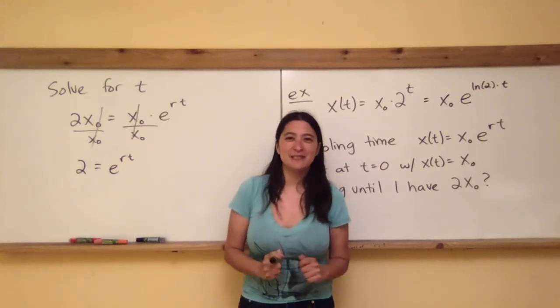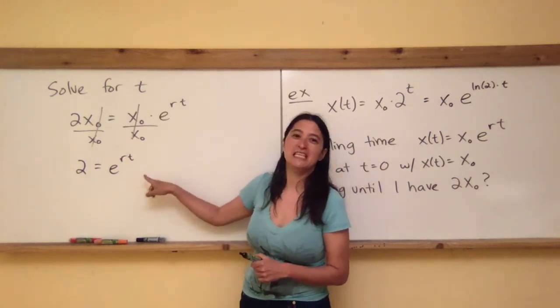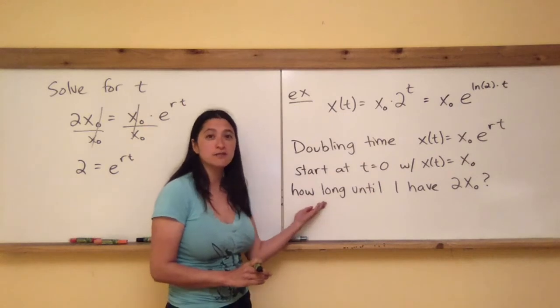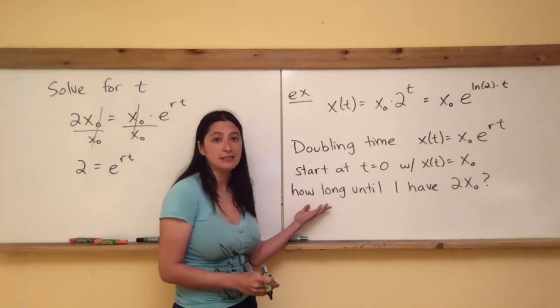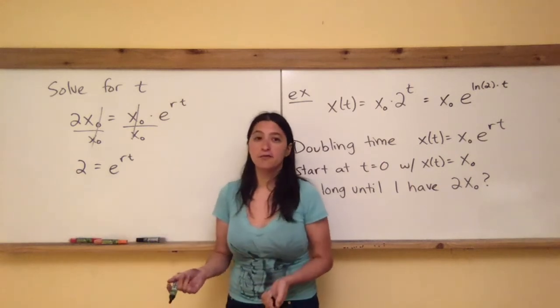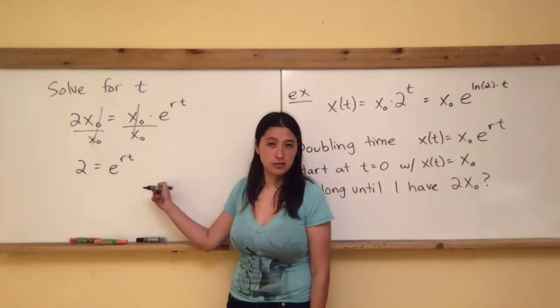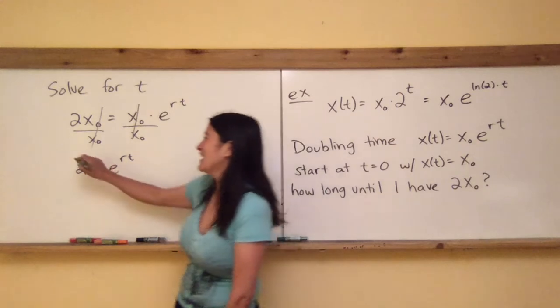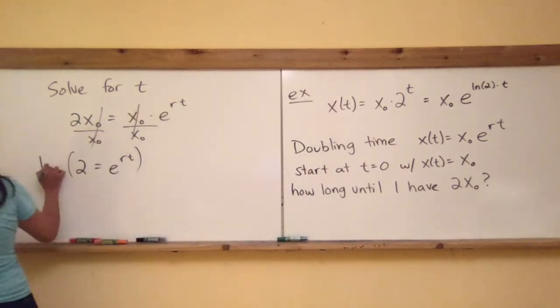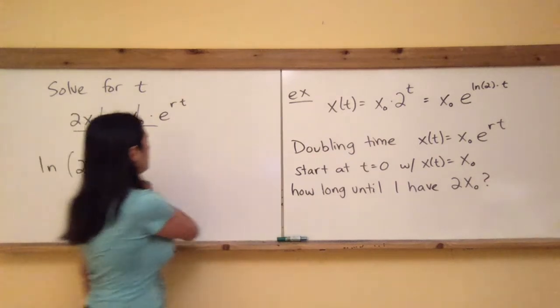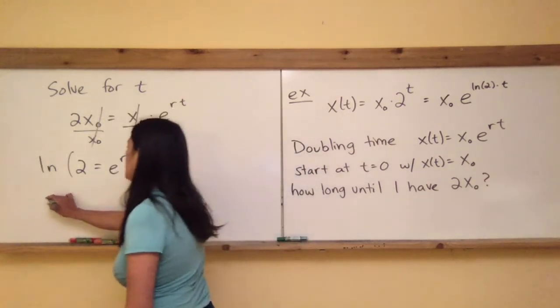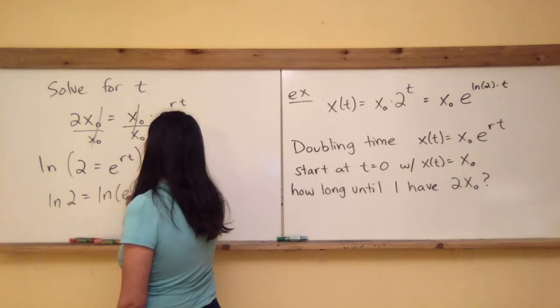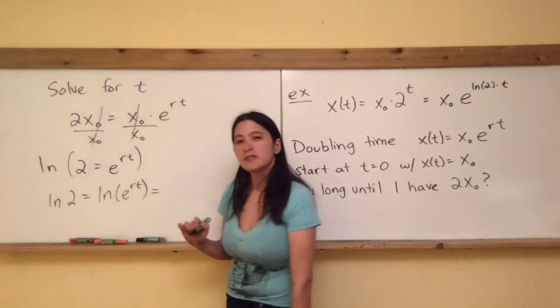Now, let's see how much precalculus you really remember. I want to solve this for T. Let's say that the growth rate R is already known to me, but the question I have is a question of time. How long, how much time does it take for me to get to double of what I had before? What are you going to do to both sides of this equation in order to solve it for T? Take the natural log. Yep. You're going to want to take the ln of both sides. So I'll do this one at a time. The natural log of 2 is just called ln(2).